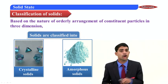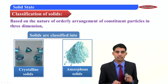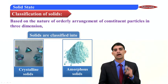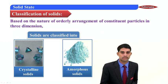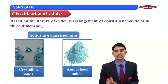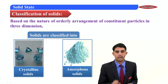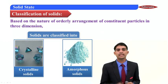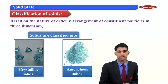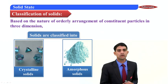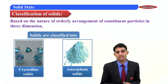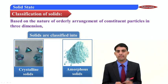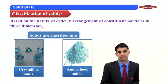No long-range orderly arrangement of constituent particles characterizes amorphous solids. For crystalline solids, examples are quartz, sodium chloride, etc. For amorphous solids, examples are polyvinyl chloride, glass, fiber, etc.